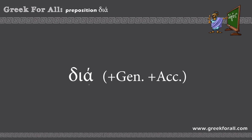The preposition dia works with two cases: the genitive and the accusative. The following word after this preposition will be either in the genitive or in the accusative case. In the New Testament this preposition appears 668 times — dia plus genitive appears 388 times and dia plus accusative appears 280 times.